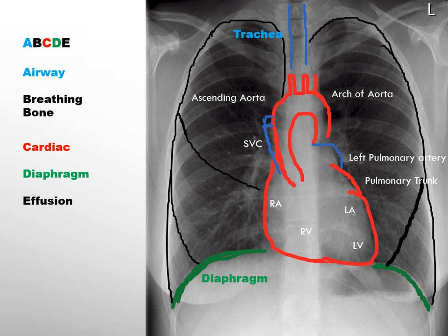B also stands for bone, which involves searching for fractures and lytic lesions in the bones. C stands for cardiac; when evaluating the cardiac shadow, we comment on the cardiothoracic diameter, which should normally be less than 50% of the maximum transverse thoracic diameter, as well as the pulmonary trunk, arch of aorta, and right atrium. D represents the diaphragm — typically the right side is positioned higher than the left. E represents effusion, assessed by looking for blunting of the costophrenic angle.